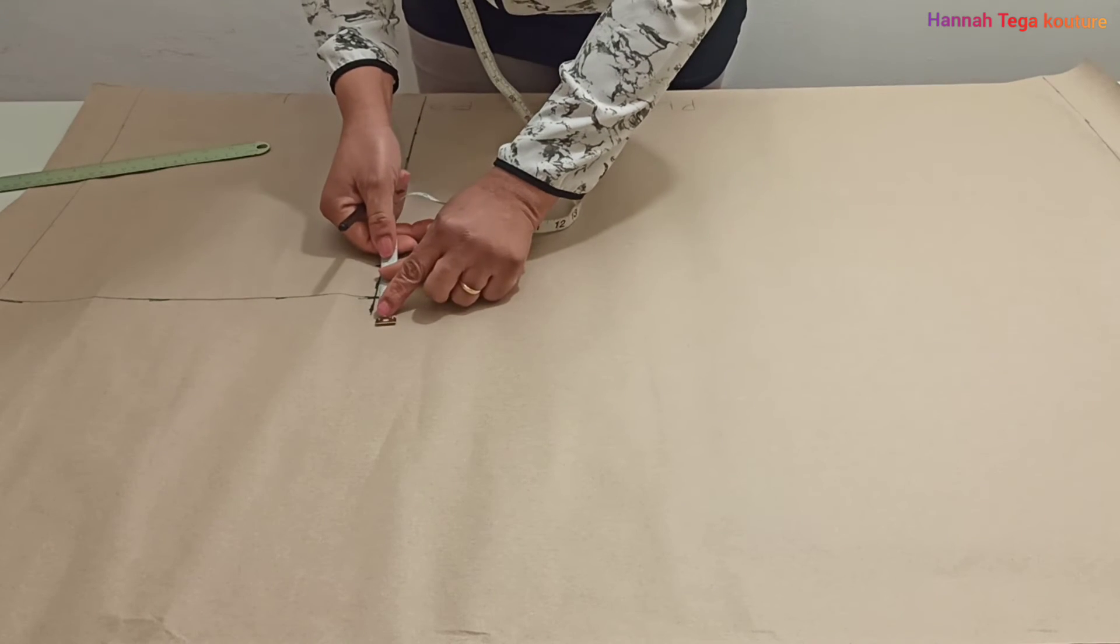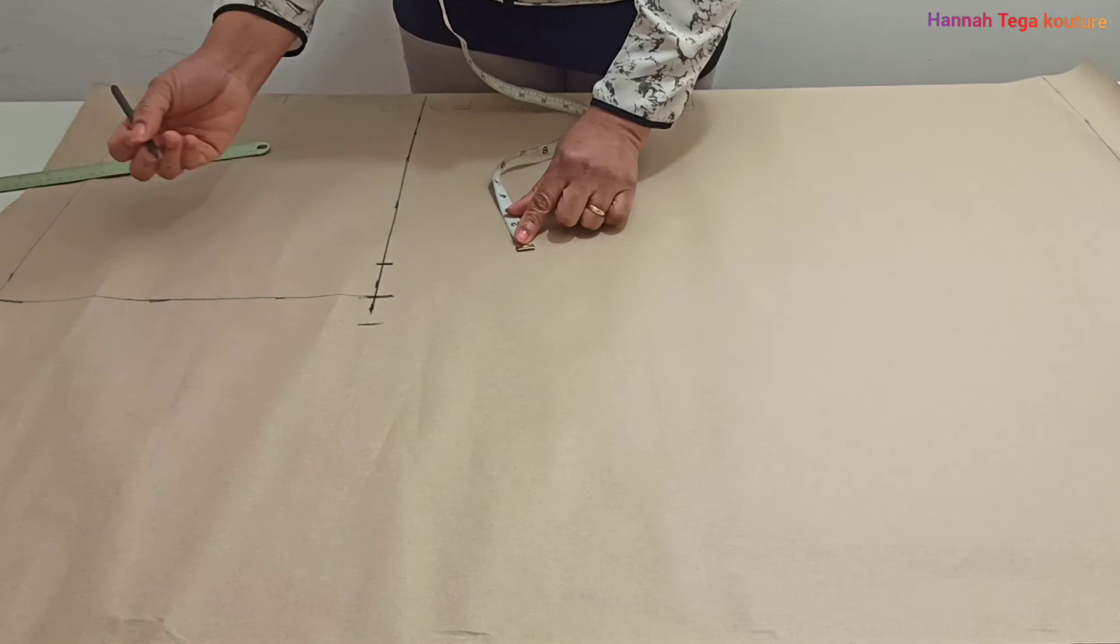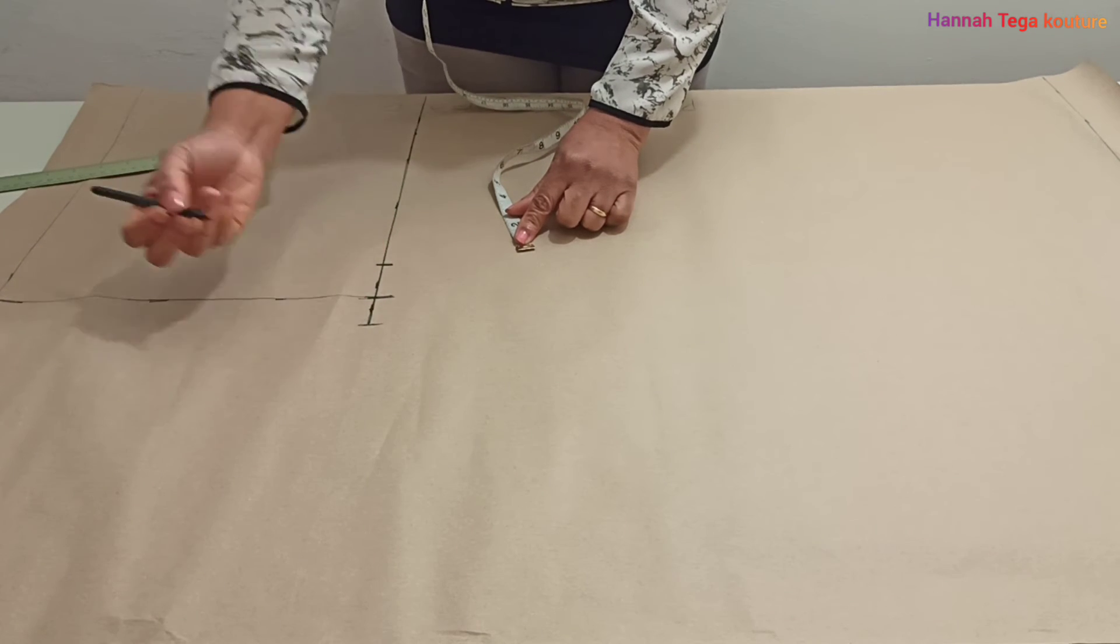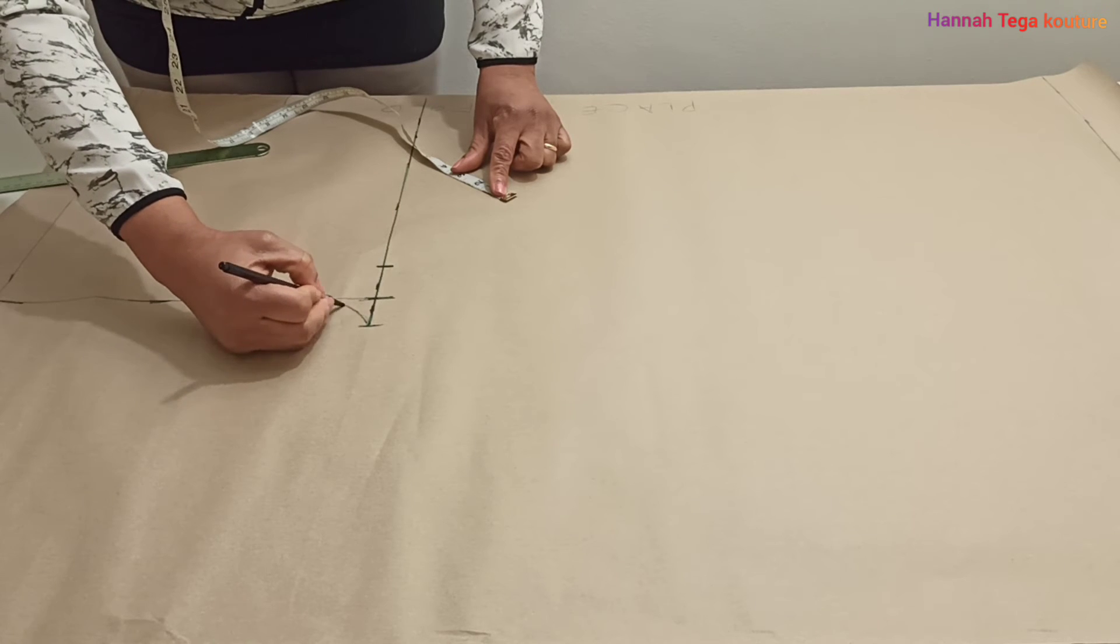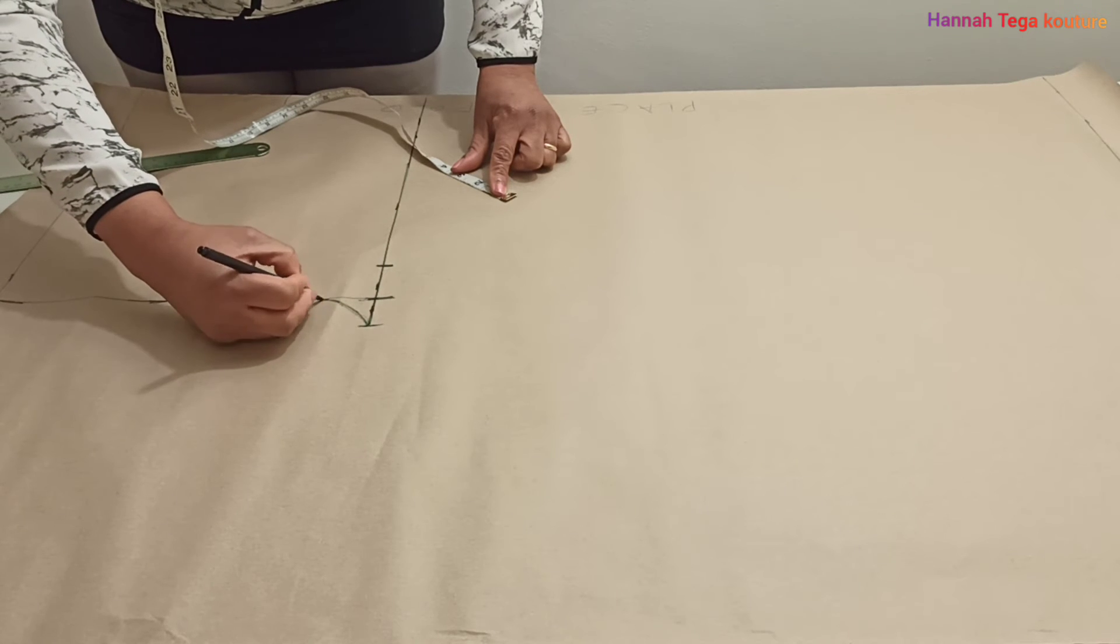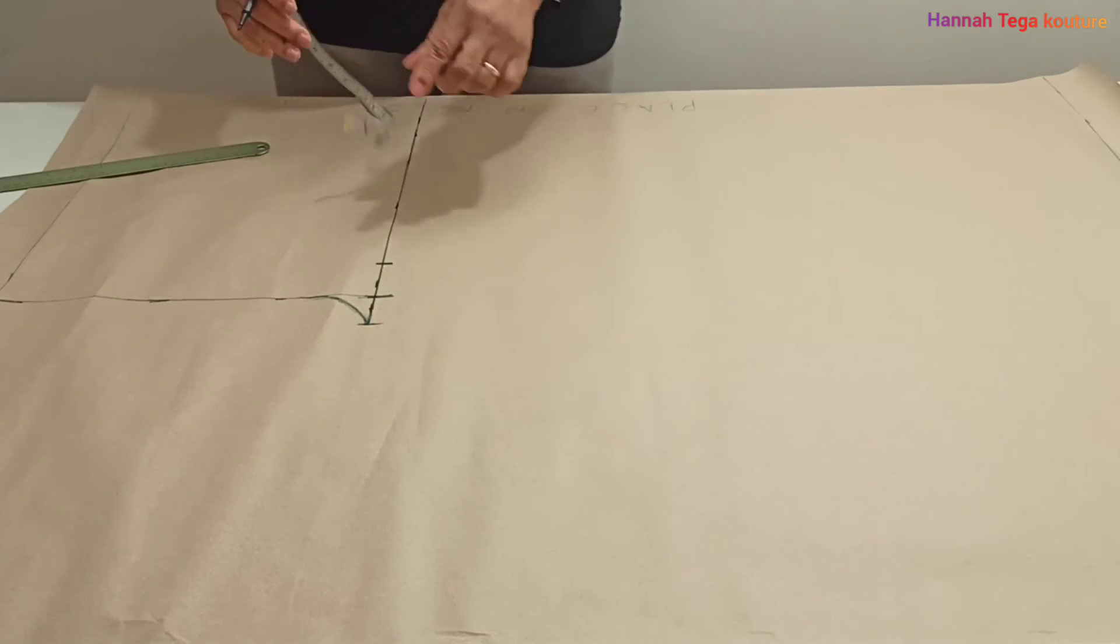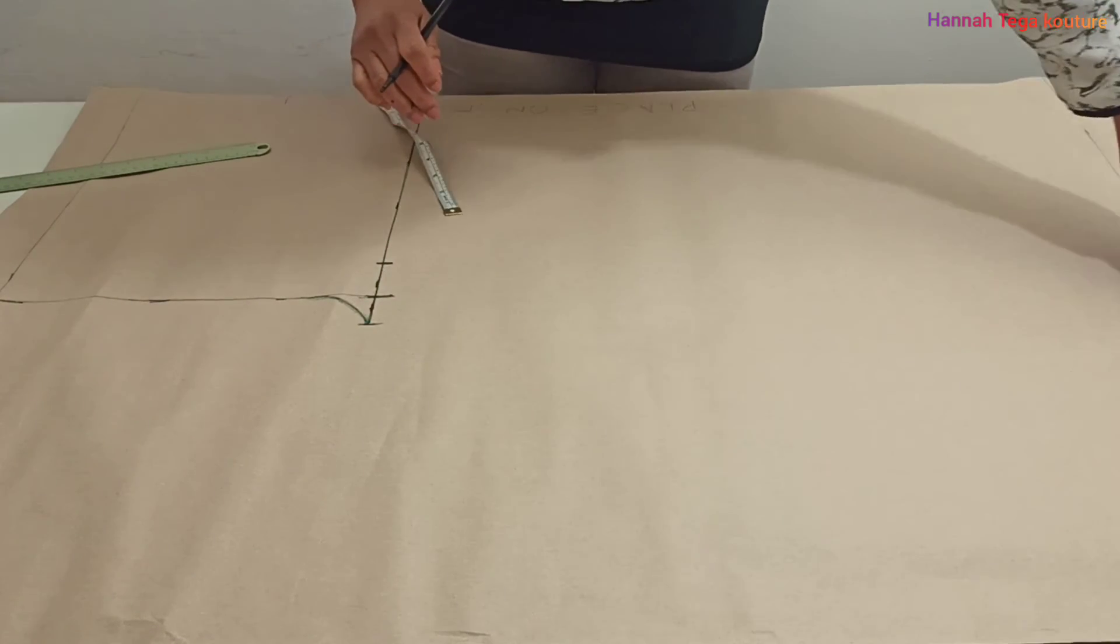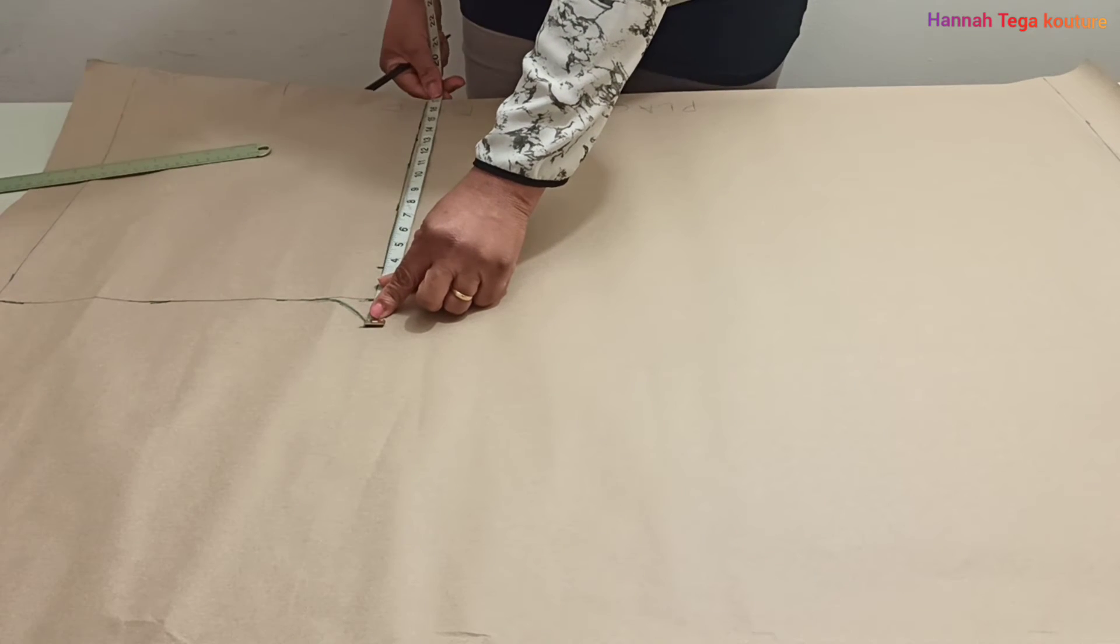So here you're going to add an additional 1.5 inches to your tie line and connect it together. Then draw a curve up, up, up like that. So that forms the crotch, that forms the entire crotch. Then you can make yours a bit more curved out than mine.